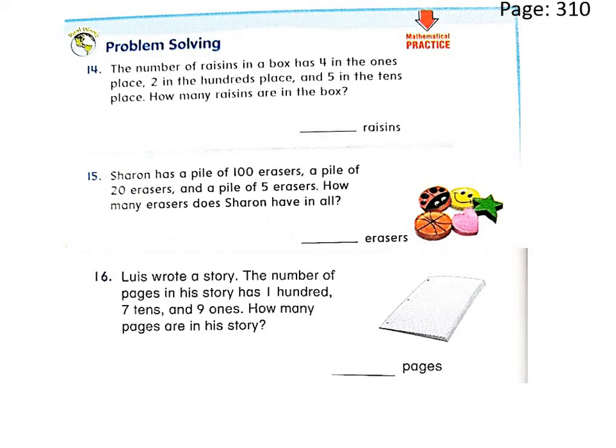Question number fourteen: the number of raisins in a box has four in the ones place, two in the hundreds place, and five in the tens place. How many raisins are in the box? Four for ones, two for hundreds, and five for tens — so the number is two hundred fifty-four.